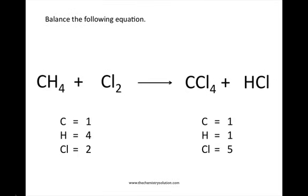Our next step is to balance the number of hydrogen atoms. I'm choosing to start with hydrogen because it occurs in one compound on the reactant side, CH4, and one compound on the product side, HCl. In order to balance the number of hydrogens on the product side, we're going to put a coefficient of four in front of HCl. Remember, we can only add coefficients — we can never change subscripts.